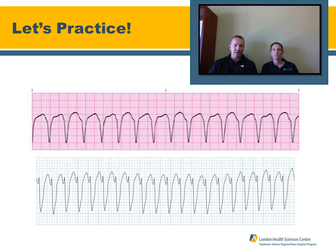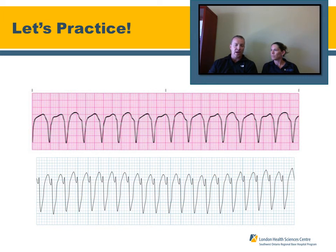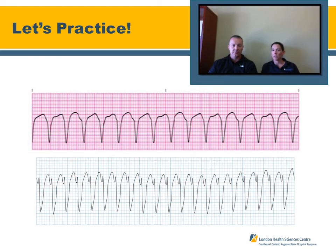Looking at the next two rhythms: wide, fast, and regular — this is VTAC. They can look slightly different, but the key points are that VTAC is wide, fast, and regular. Patients with a pulse need to be cardioverted and transported to an emergency department. If a patient is VSA and you're doing manual rhythm interpretation, charge up and shock. If the patient has a pulse but is hemodynamically unstable with a blood pressure less than 90, bolus them according to your directive.